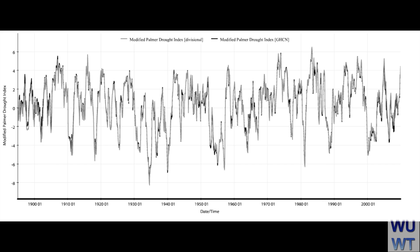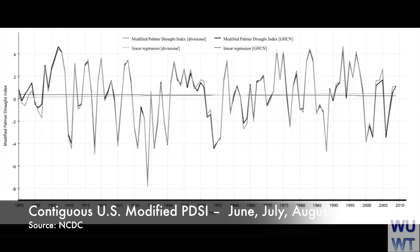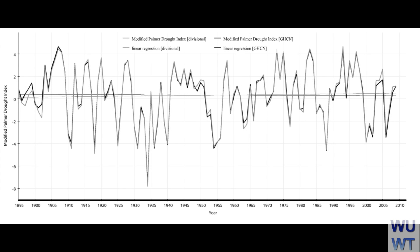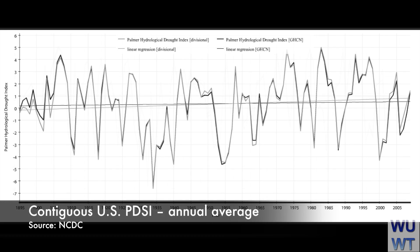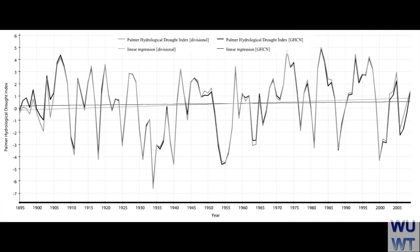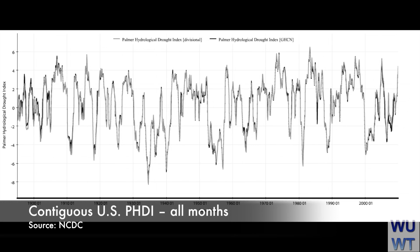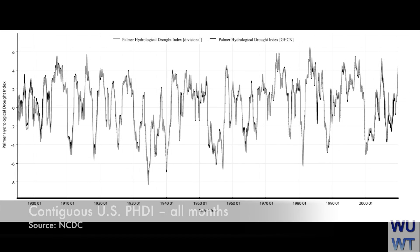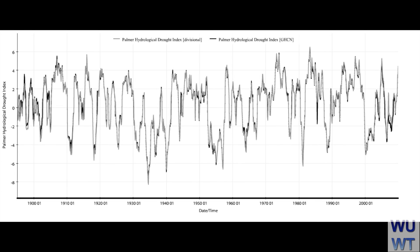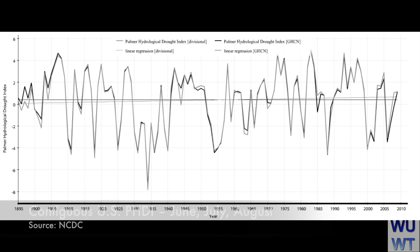Here's the same data by months. Notice for summer months the century-scale trend is slightly down, but there is still no large century-scale trend in drought. The Palmer Hydrological Drought Index is still essentially flat. Note that while there are slight upward trends in the divisional data plots suggesting less drought, NCDC says this is erroneous and will introduce the new gridded method in 2013. The GHCN values are flat.